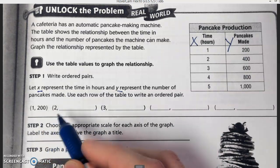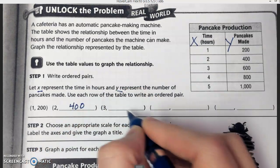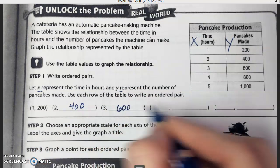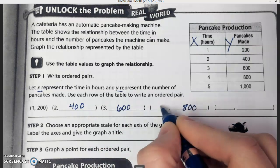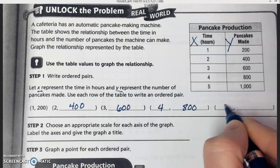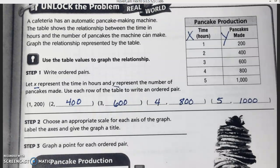Then when we have 2 for X, what would we have for Y? When we have 3 for X, what would we have for Y? What would my next one be? 4 and 800. And then my last one? 5 and 1,000. So first, we just took the information from the table and we made ordered pairs with that information, and they told us which one would be X, which one would be Y.